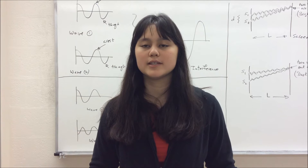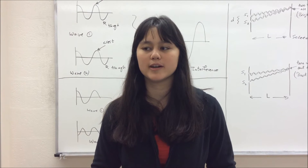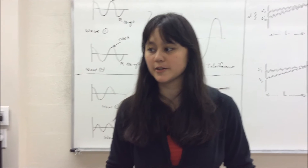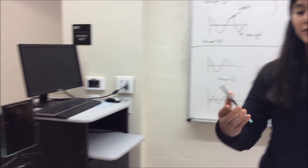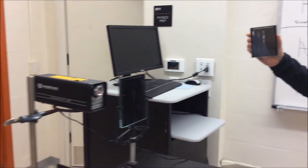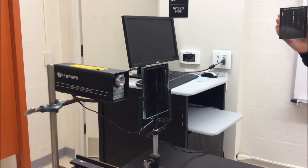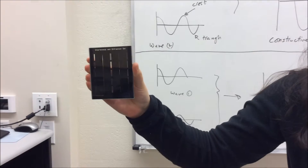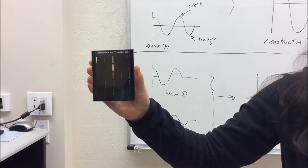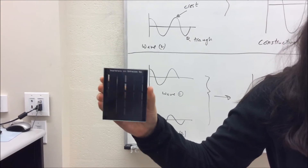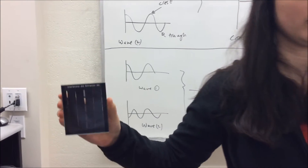For this experiment, you're going to need a laser, an interference and diffraction slit set — specifically the single slit and double slit set — as well as a ruler and a screen.